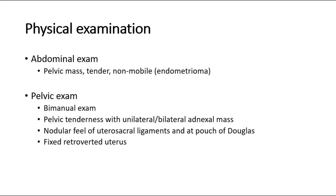On physical examination, we can do abdominal examination, which may not reveal any abnormalities, but we may feel a tender, non-mobile mass arising from the pelvis, suggesting endometrioma. On pelvic bimanual examination, positive findings may include pelvic tenderness with unilateral or bilateral adnexal masses of varying sizes, a nodular feel of the utero-sacral ligaments and pouch of Douglas, and a fixed retroverted uterus.